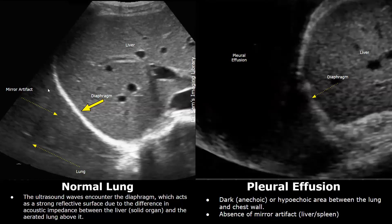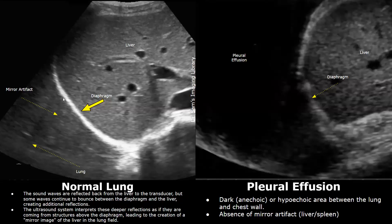The mirror image artifact occurs when the ultrasound waves encounter the diaphragm, which is a strong reflector due to acoustic impedance difference between the liver and the lung. The liver is a solid organ but the lung is an air-filled organ. The ultrasound waves are easily reflected from the liver back to the transducer and also easily reflect from the diaphragm. But at the interface between the liver and lung there is a strong acoustic impedance mismatch, which makes the ultrasound waves bounce back and forth between the liver and the diaphragm.